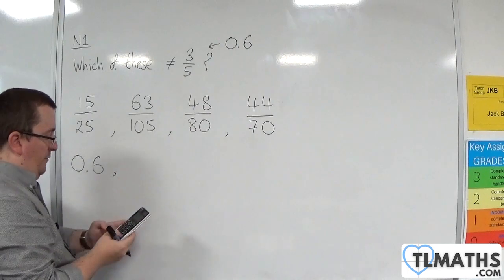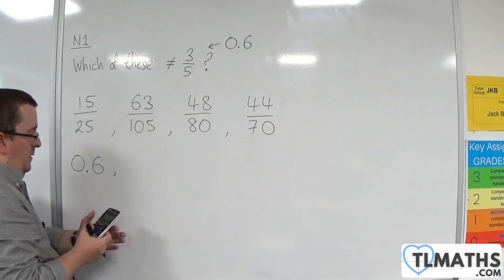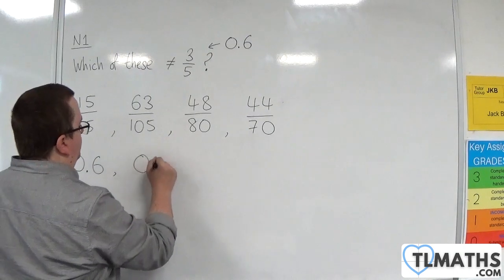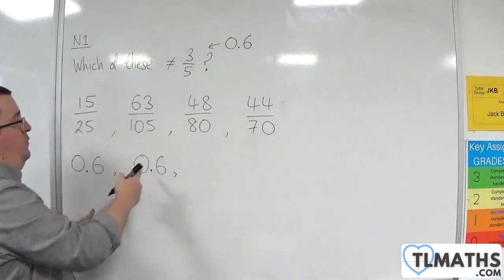63 over 105 is 0.6. So that's not the one we're looking for.